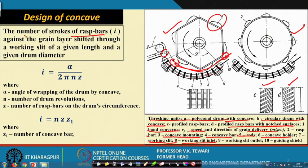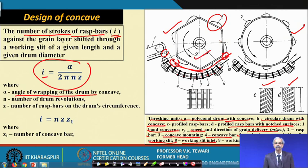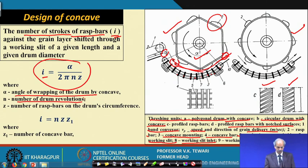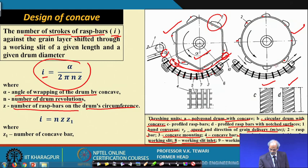The number of strokes of the rasp bar, i, is given as: i = α / (2π · n · z), where α is the angle of wrap, n is the drum RPM (number of drum revolutions per minute), and z is the number of rasp bars on the drum's circumference. You can see the angle of wrap shown in the diagram, and the rasp bars are indicated on the drum.